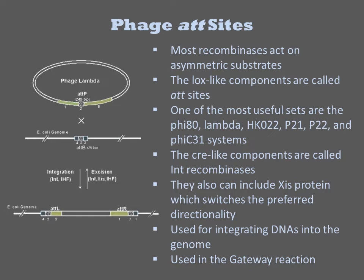One of the most useful sets are the various prokaryotic phages, mostly but not exclusively from E. coli. The recombinase component is called the int recombinase, and there is a second protein called excisionase, which upon expression reverses the directionality of the reaction. These enzymes are used in some methods of genome engineering, in the gateway cloning method of moving DNAs from one DNA to another, and in several genetic circuits for digitally controlling gene expression.